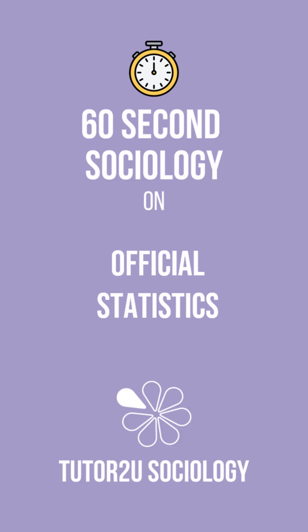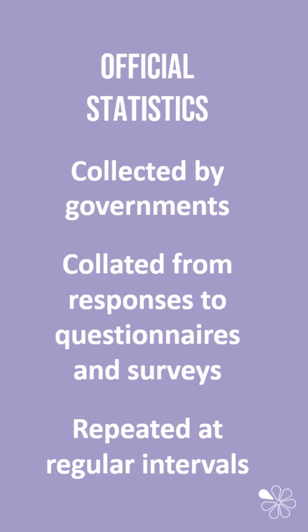In this 60 Second Sociology we're going to look at official statistics. Official statistics are data that is collected by governments, and they're usually collated from responses to questionnaires and surveys. These questionnaires and surveys are repeated at regular intervals to make sure that official statistics are relatively up to date.